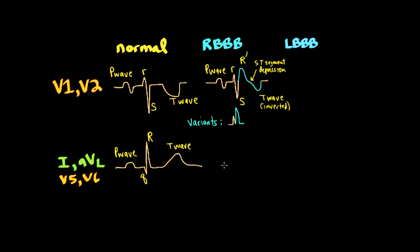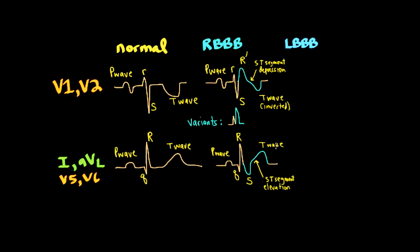For right bundle branch block in leads 1, AVL, V5, and V6: the P wave and PR segment are normal. There is a normal septal Q wave from the left bundle branch, followed by an R wave from the LV free wall forces. Then there is an abnormal broad S wave representing delayed RV depolarization. The ST segment is slightly elevated and the T wave is upright. These are also considered secondary ST segment T wave abnormalities from the bundle branch block.